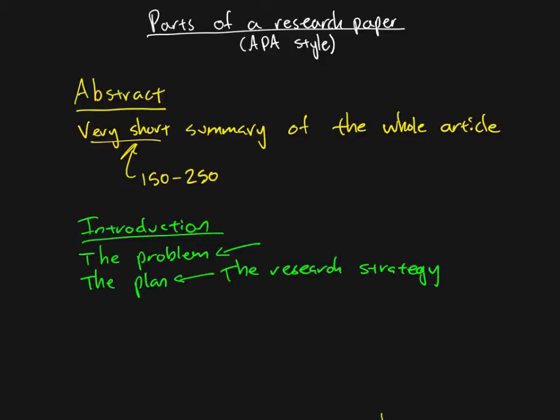This is given in general terms, at least in relation to the next section we're going to talk about which is the methods section. The methods section is giving the research strategy, the design, exactly how you're going to do everything in great detail. This section is just about saying generally how are you going to approach answering this question.